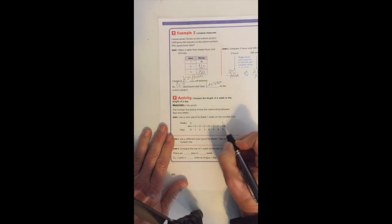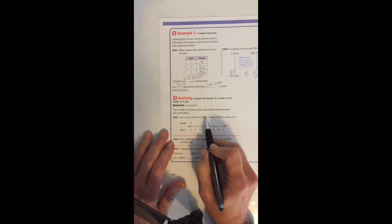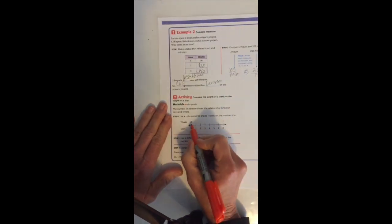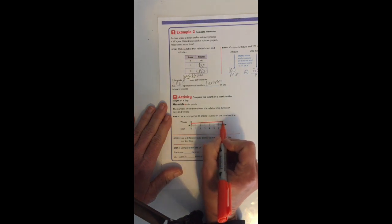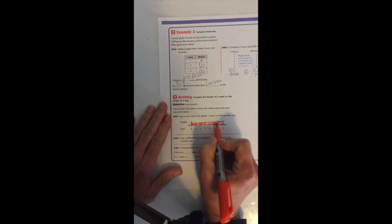Use a colored pencil to shade one week on the number line. I couldn't find my colored pencils, I'm using a sharpie. So I want to shade one week, which would go from here to here, so I could color that in.